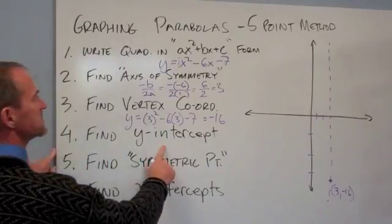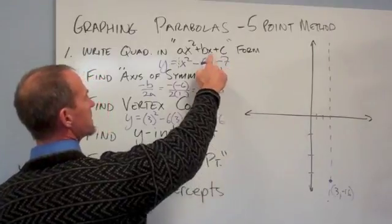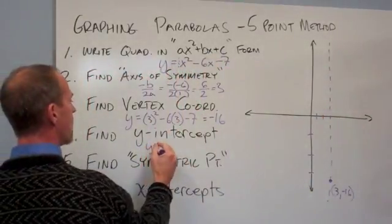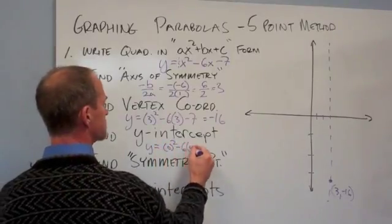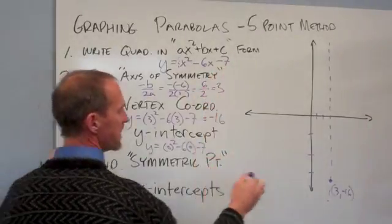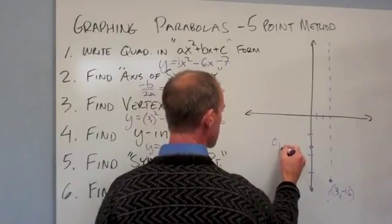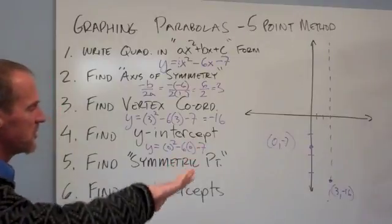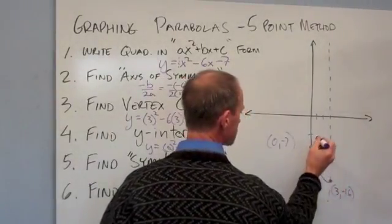Then find the y intercept. This is wicked easy because all we do is we look at the c value because when x is 0, we're on the y axis. So it's just going to be y equals 0 squared minus 6 times 0 minus 7. So those always just drop out. Look at the c value. It's minus 7. Well, there's my 0 comma minus 7. That is my y intercept. Alright? So parabolas always have a nice little curve that goes up there. So I know it's going to go something like that. Okay?